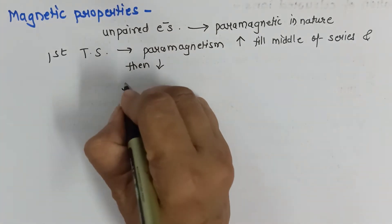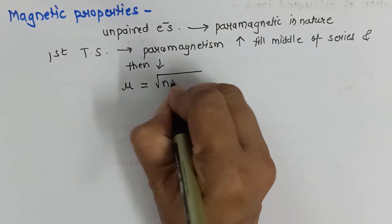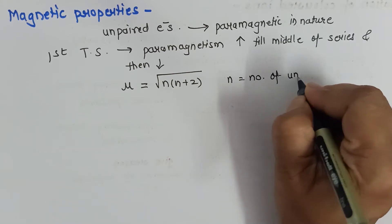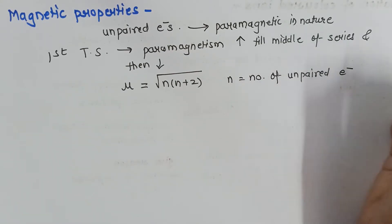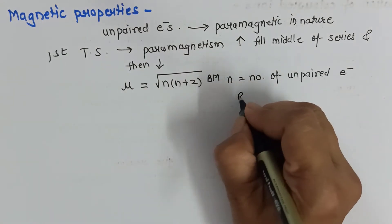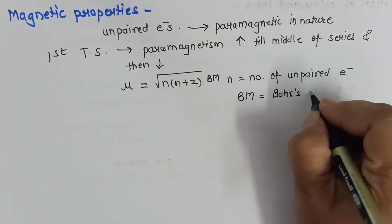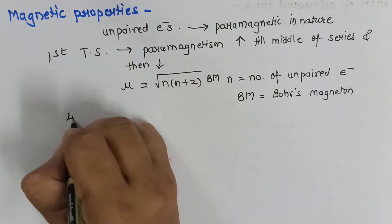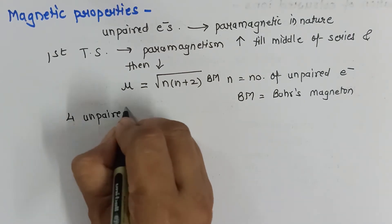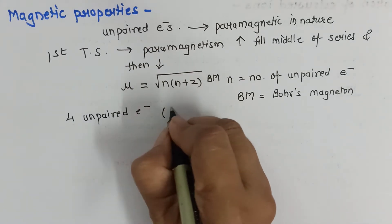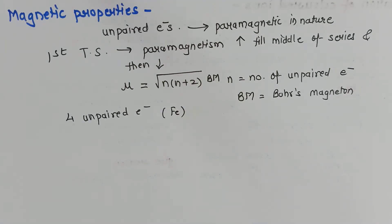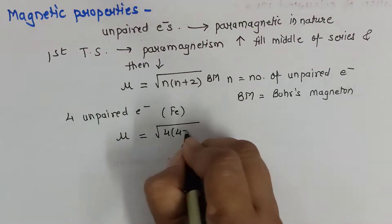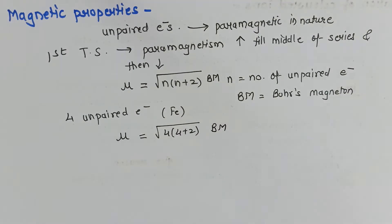We can calculate magnetic moment by the formula μ = √(n(n+2)), where n is the number of unpaired electrons, and the SI unit is BM (Bohr's Magneton). For example, iron with configuration 3d6 4s2 has four unpaired electrons, so μ = √(4 × 6) Bohr's Magneton. This is how we calculate magnetic properties.